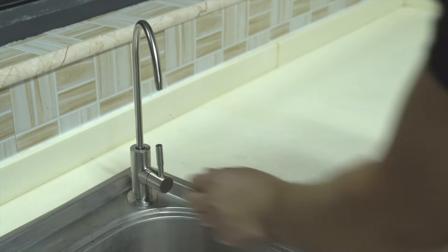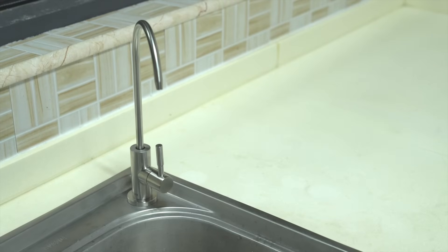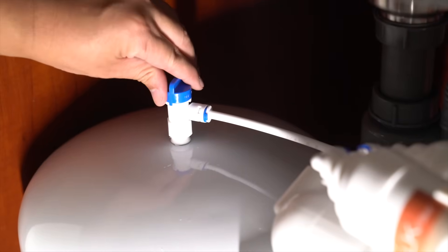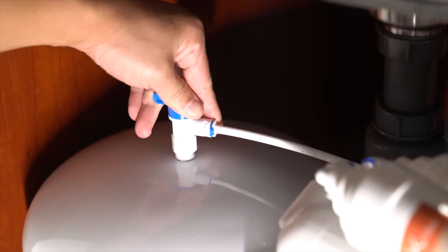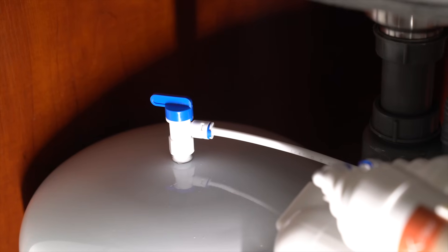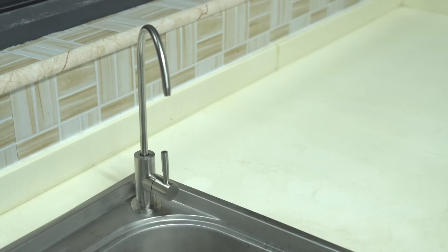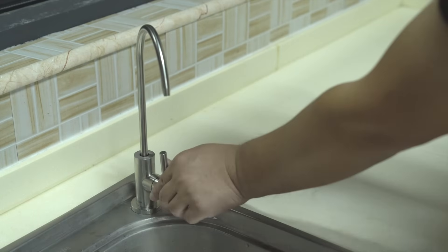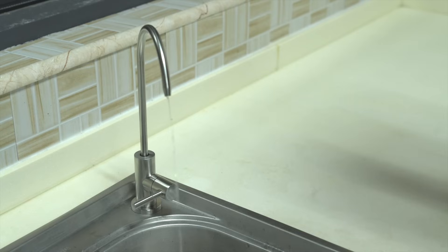After 10 minutes, close the sink faucet. Open the ball valve on top of the pressure tank and allow the tank to fill for at least 2 hours. After 2 hours, open the sink faucet and allow the water from the pressure tank to drain.